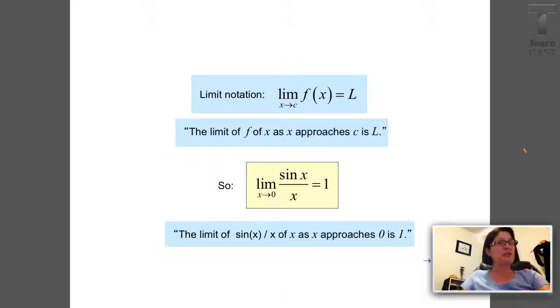So, this is the notation we use, limit notation. The limit as x approaches c of f of x equals L. And you can see I've written out the words there, so you know how to say this. So, based on the function we just explored, the limit as x approaches zero of sine of x over x equals one. Or, the limit of sine of x over x as x approaches zero is one.